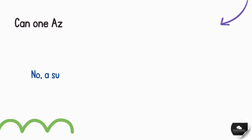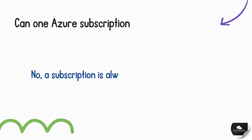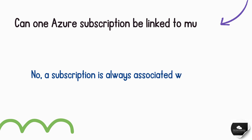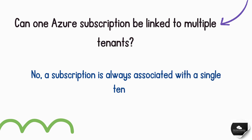Next: can one Azure subscription be linked to multiple tenants? No. An Azure subscription is always associated with a single tenant. You can switch tenants, but you can't link one subscription to multiple tenants at the same time.